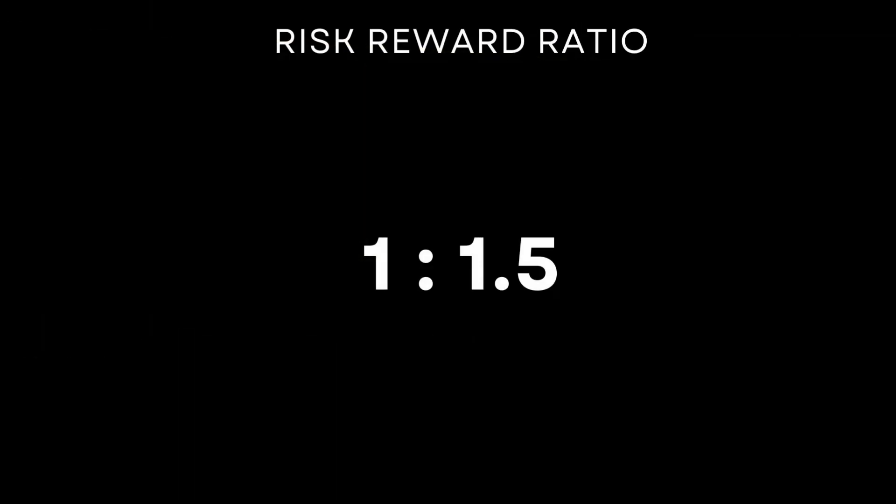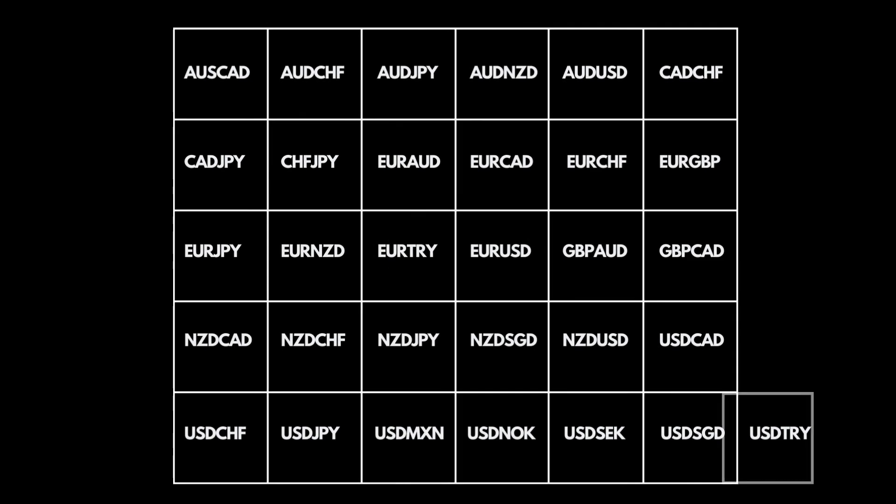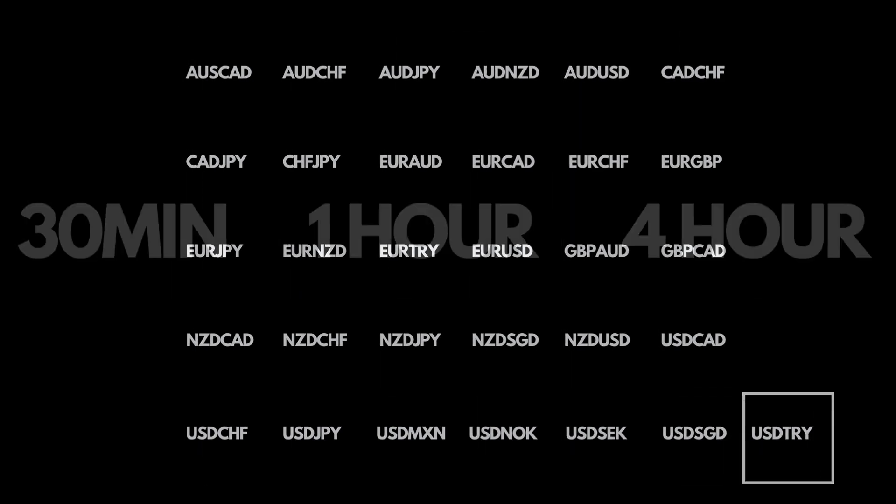We used a 1-to-1.5 risk-to-reward ratio when considering our stop loss and take profit levels. Here is the list of currency pairs that were tested — there are 31 currency pairs. We tested the strategy on three different time frames for each currency pair: 30 minutes, one hour, and four hour.